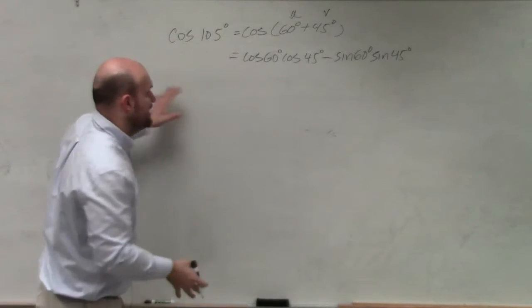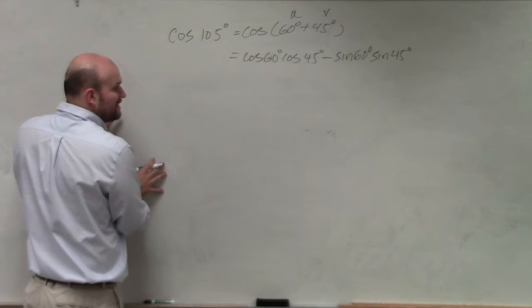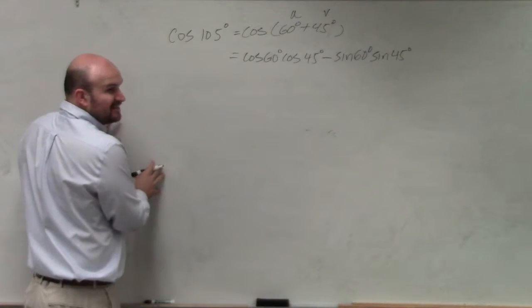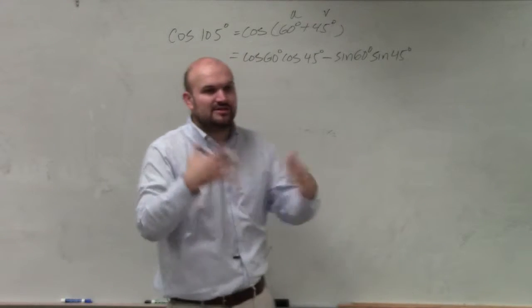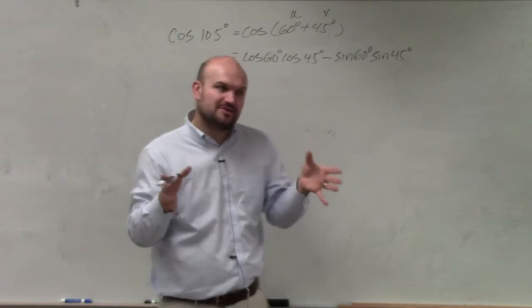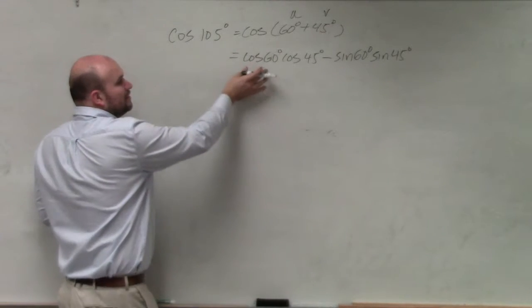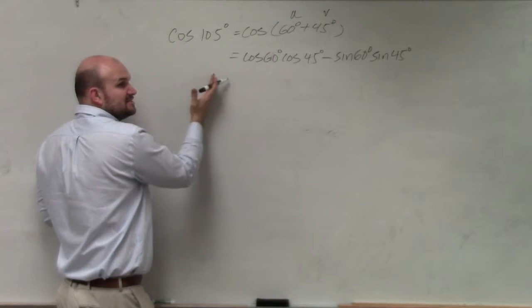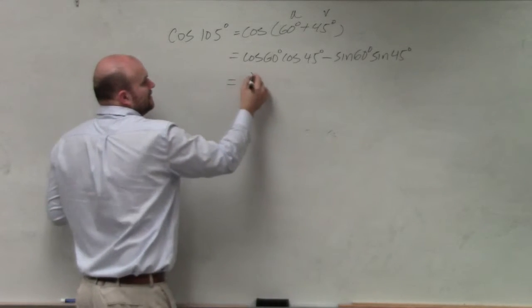Now I just need to evaluate. I erased my unit circle, which I shouldn't have done, because this is where a lot of people make mistakes, because they want to do everything in their head. So just make sure you guys are very careful with this. Cosine of 60 degrees—imagine 60 degrees—cosine, OK, that's one half.